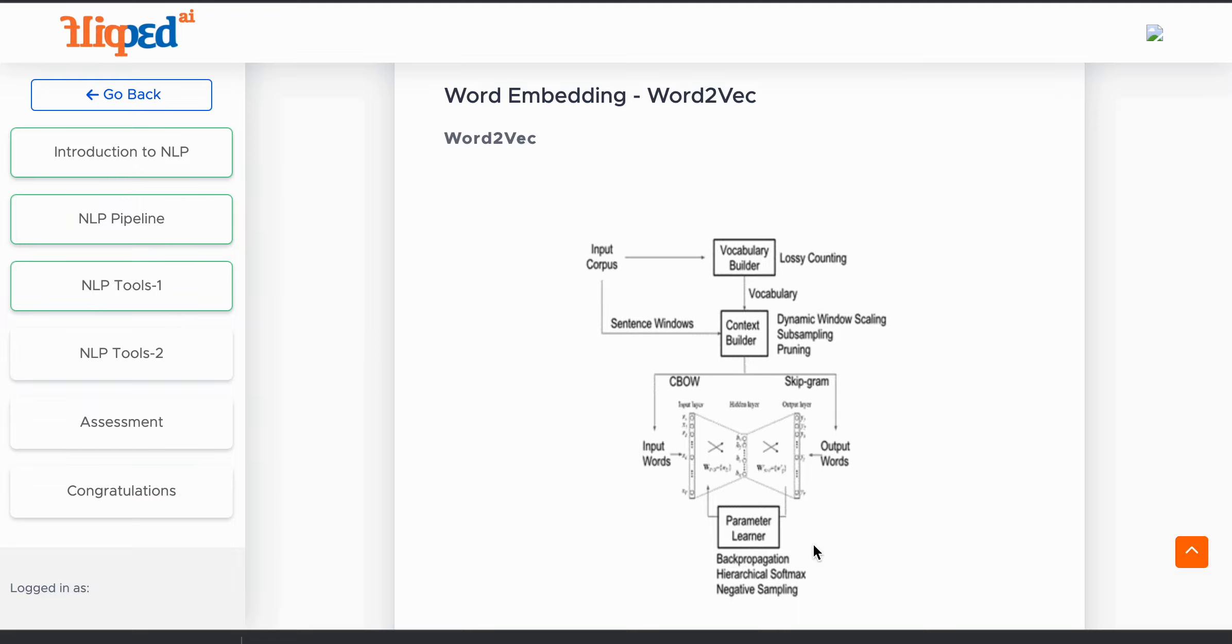Word2Vec was proposed by Mikolov in 2013. Let's try to understand the diagram. From input data, we extract vocabularies and make some processing to learn some parameters such that when a new word comes from the corpus, we should be able to represent it in a format of vector.